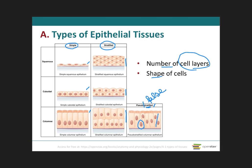With regards to cell shape, we can say that they can be flat, they can be squared, or they can be rectangular. If they are flat, they're called squamous. If they are squared, they're called cuboidal. And if they are rectangular, they're called columnar.